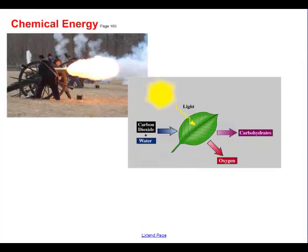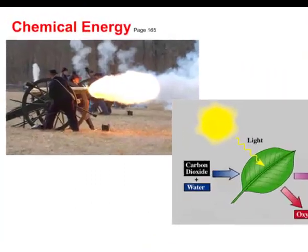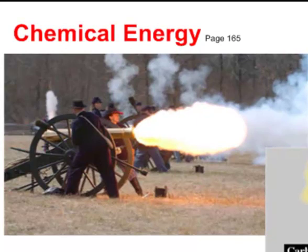One form of energy is chemical energy. Some man-made examples include a cannon going off. Here we're doing a chemical reaction of gunpowder where we ignite the gunpowder, it combines with oxygen, produces a huge amount of gas, and propels a cannonball forward at great speed.